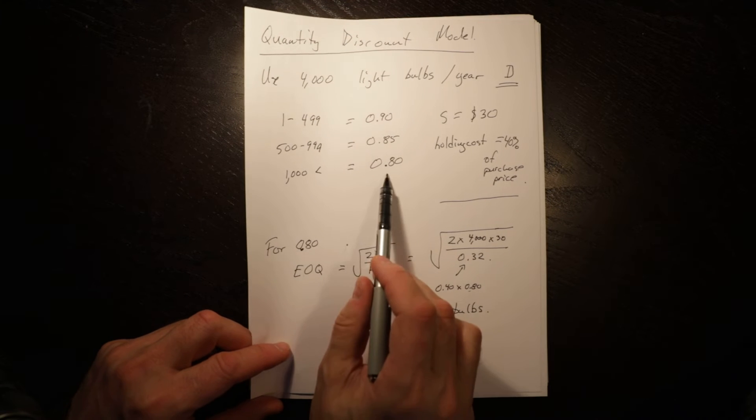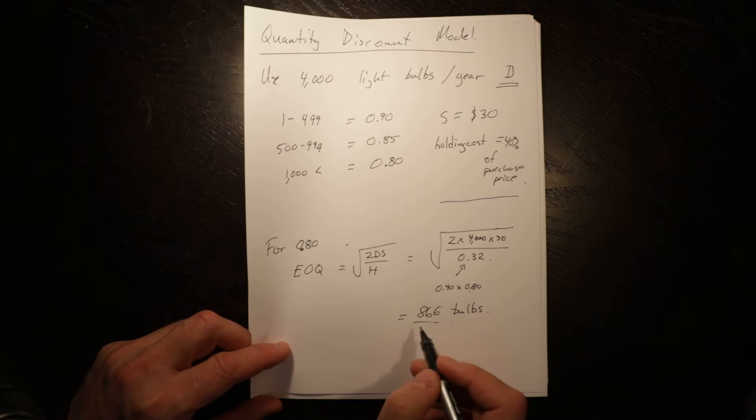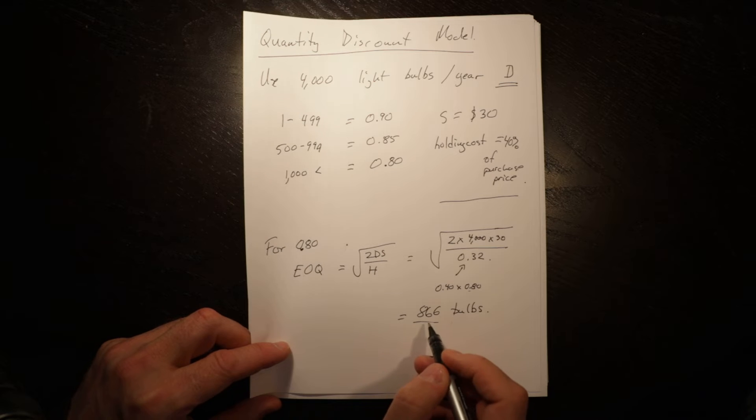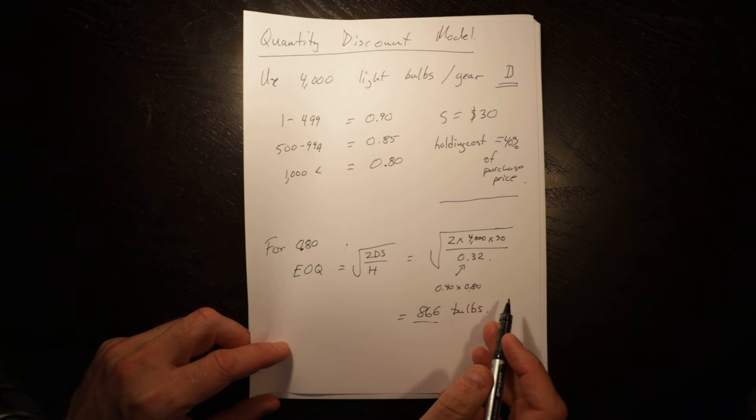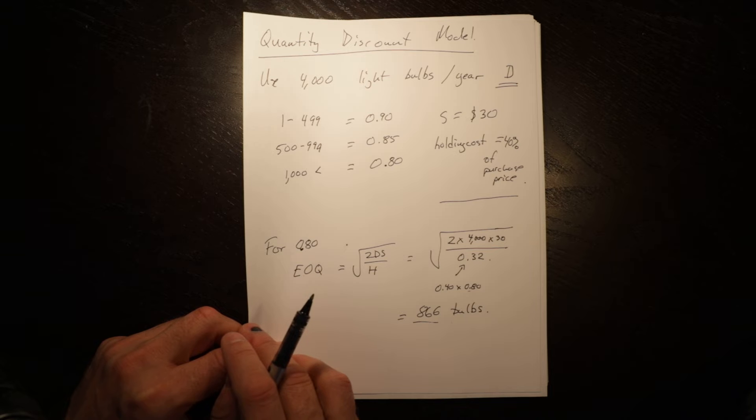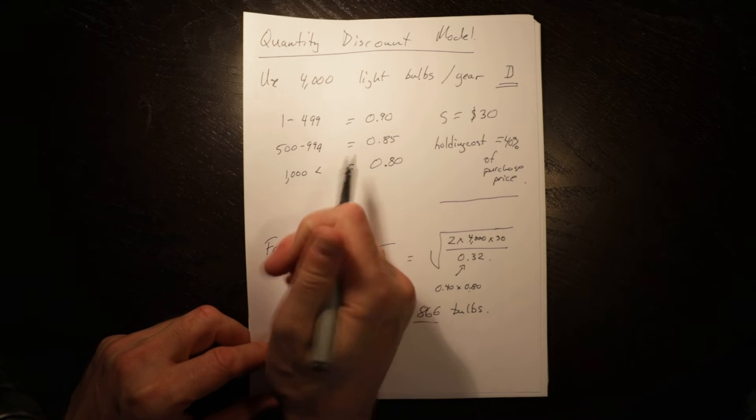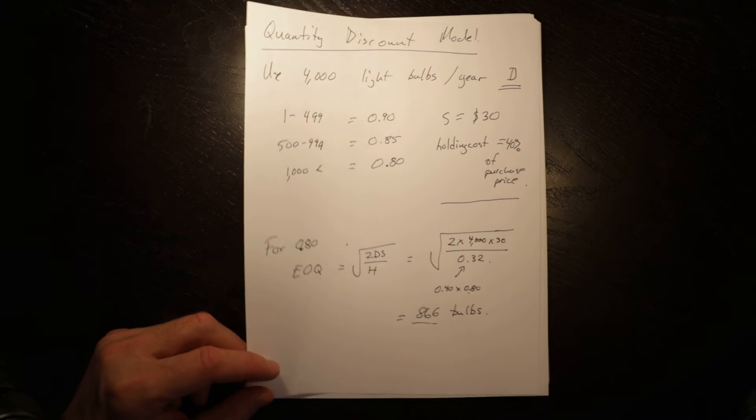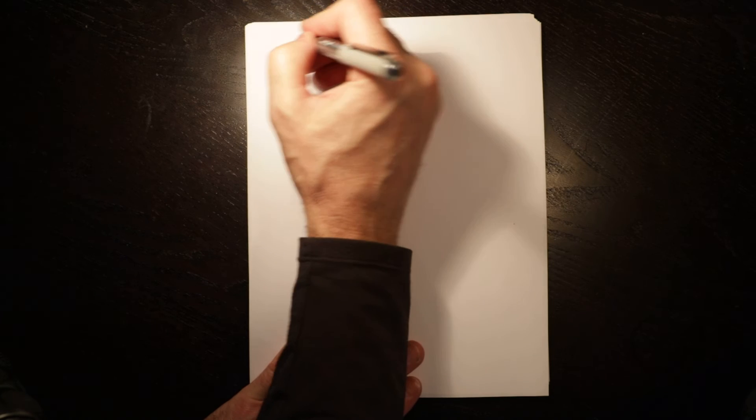In order to take advantage of the 80 cent deal, we would have to increase our holding costs. It would reduce our setup costs, but our overall total costs would go up, and we have to see if that is positive or negative relative to the acquisition costs.